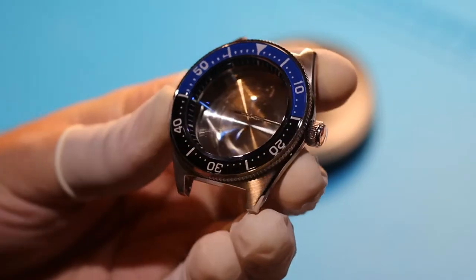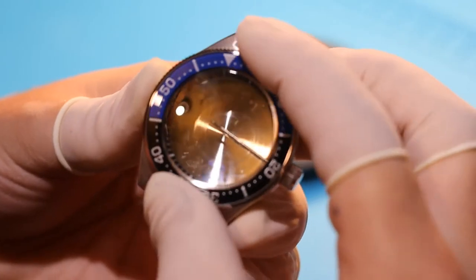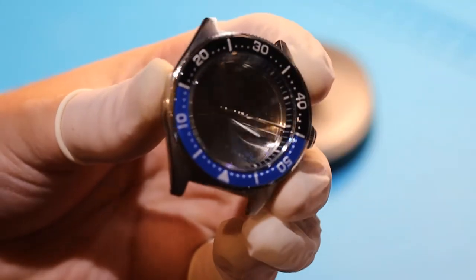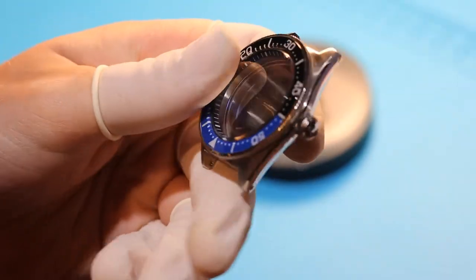So today's build is going to be centered around this beautiful Batman 62MAS case. This build is going to be a little bit shorter than usual because this case actually comes pre-assembled, as you see here, but great quality, sapphire crystal, sapphire bezel, and beautiful finishing on this case overall.